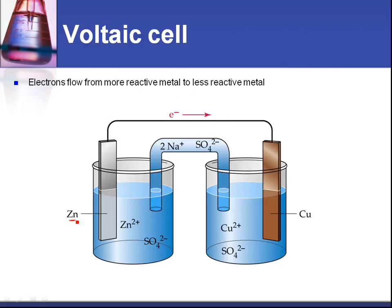If you look at the reactivity series, you'll know that zinc is more reactive than copper. So the electrons are going to flow from zinc to copper. And we usually have the more reactive metal on the left and the less reactive metal on the right.